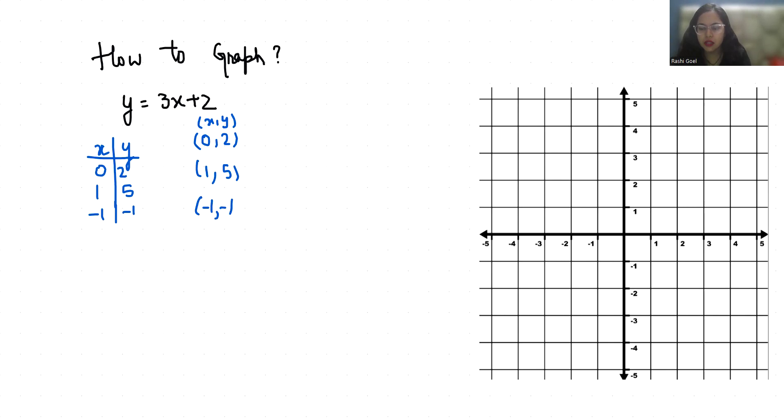So this is our y axis and this is our x axis. Now first is 0 comma 2. So 0 is origin and 2 here. So this is 0 comma 2.